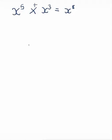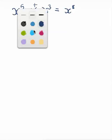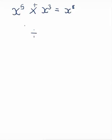So 5 plus 3 gives us 8, and that would be our answer. Now, with this index law, instead of multiplication, we will be dividing. We'll use the same example: x to the power of 5 divided by x to the power of 3. A way to remember this is that multiplication and division are opposite operations. So if we had to add the powers when we multiplied, that means we have to do the opposite of addition, which is subtraction.